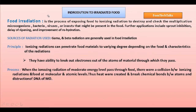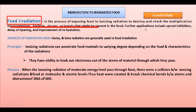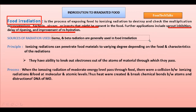What is food irradiation? Food irradiation is a process of exposing food to ionizing radiation to destroy and check the growth of microorganisms — bacteria, viruses, or insects — that might be present in the food. Further applications include sprout inhibition, delay of ripening, and improvement of rehydration. Gamma and beta radiations are generally used in food irradiation.